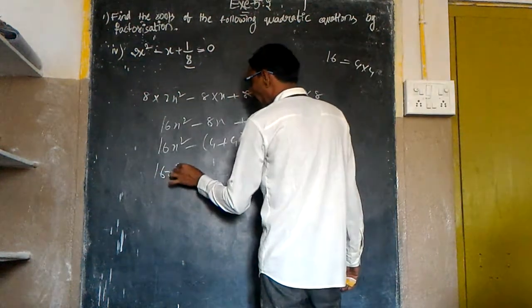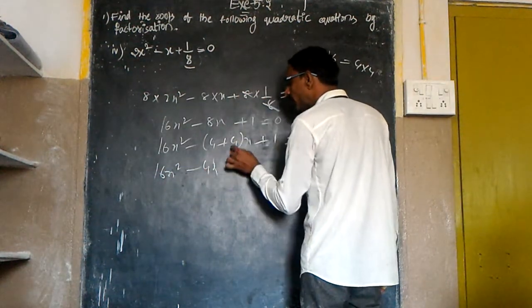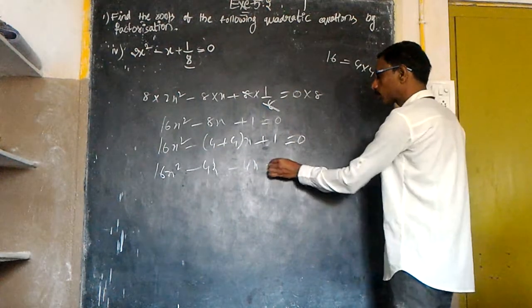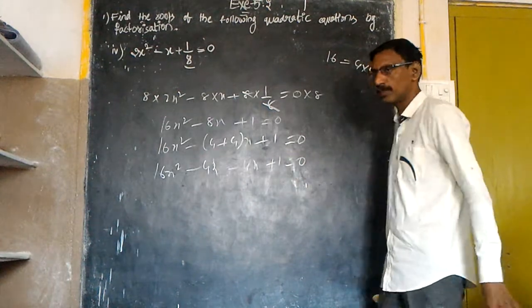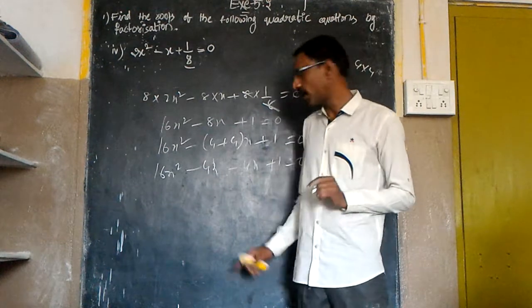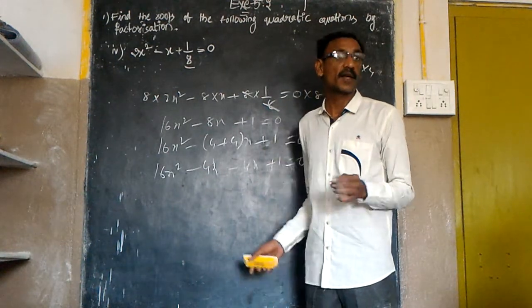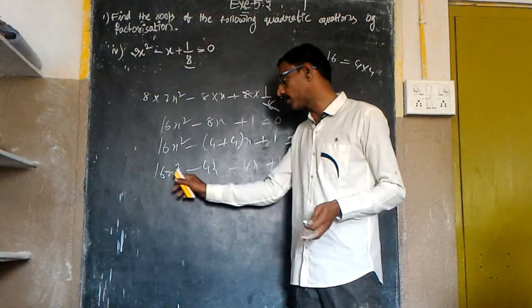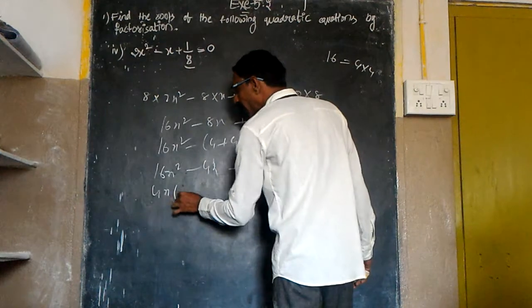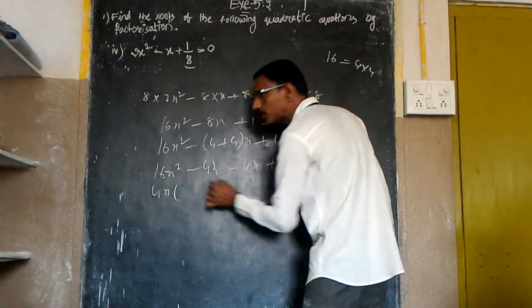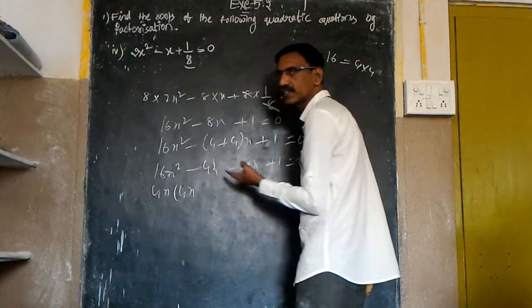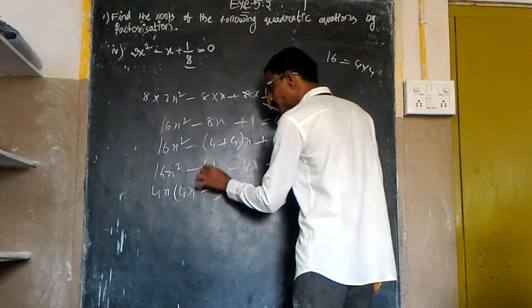So 16x square, 4 into x is 4x, 4 into x is 4x, but minus into minus is plus, keep in mind. Plus 1 is equal to 0. So here and here, we have 4x is common. Common means it is a common factor. 4x is a common factor between these two terms. 4x times (4x minus 1). Same thing, 1 into 4x is 4x.